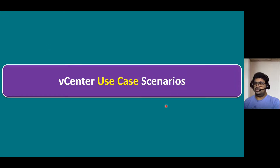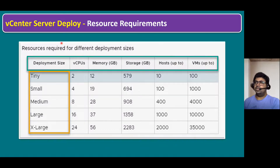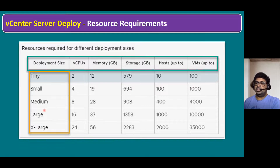So vCenter use case scenarios — we discussed these a couple of times previously, so let's quickly recap. When we plan to deploy a vCenter server, we have to verify our vCenter resource requirement. That resource requirement is based on the customer infrastructure deployment size: tiny, small, medium, large, and x-large — similar to T-shirt sizing. Based on the sizing, we choose our vCenter resource requirement. And similarly, if we have multiple sites, we require multiple vCenter servers. The same scenario applies for VCF as well.